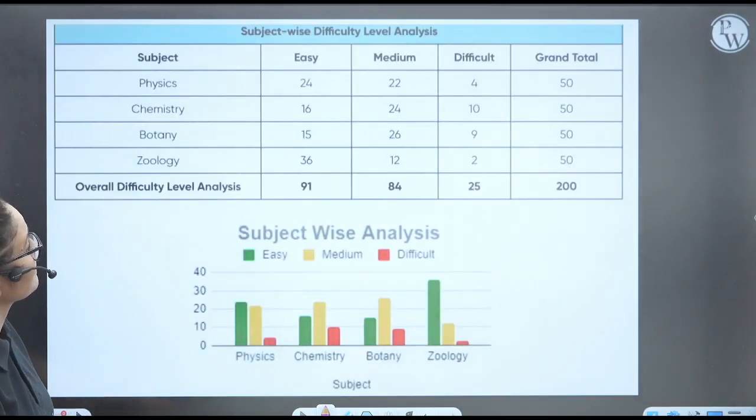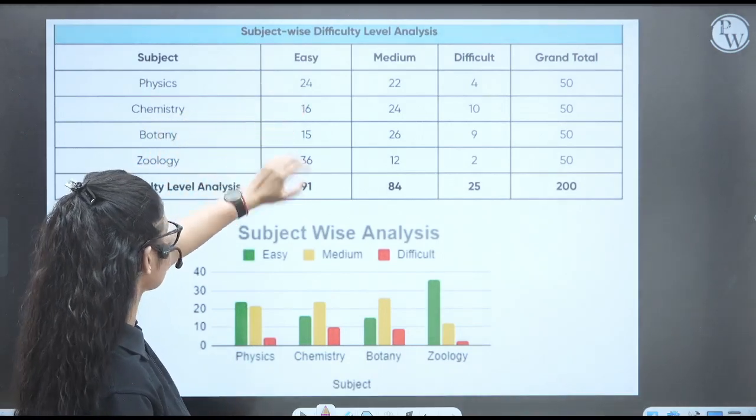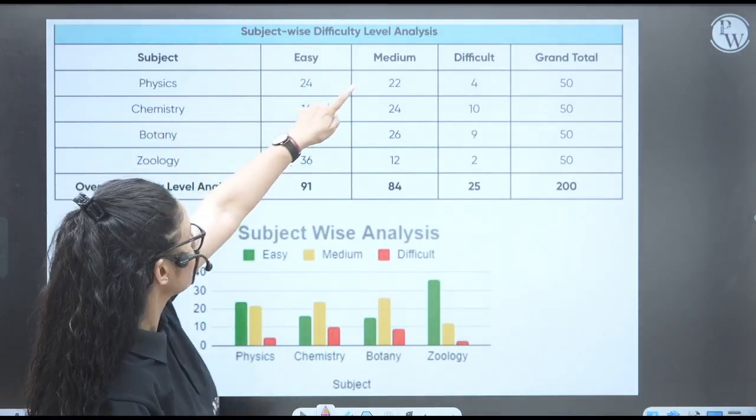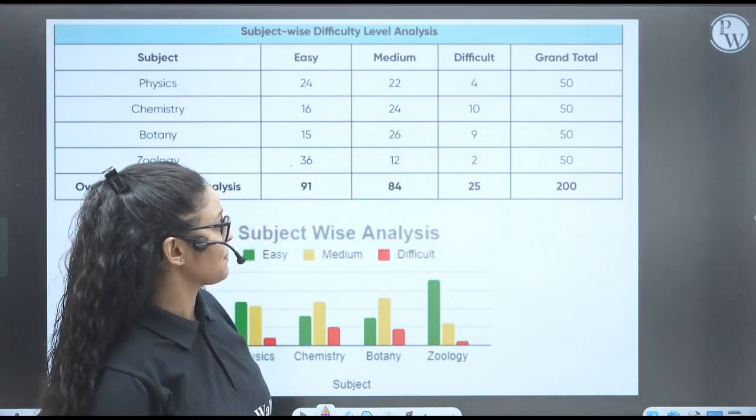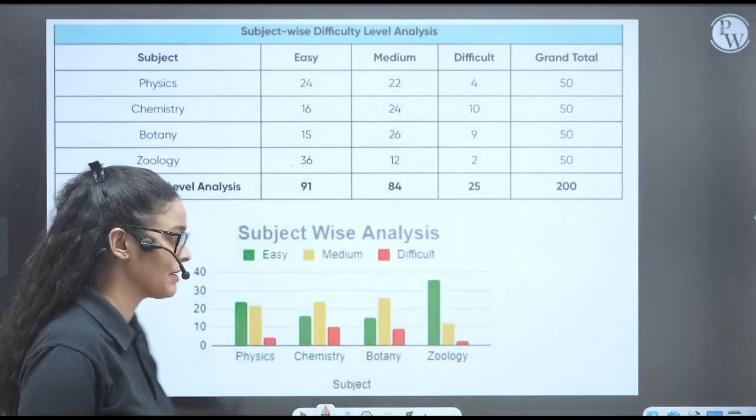Next, when we talk about the subject-wise difficulty analysis: physics has 24 easy, 16 medium type, and you can see difficult type, right? And then these are the questions. These are the number of questions you will be finding in this paper.